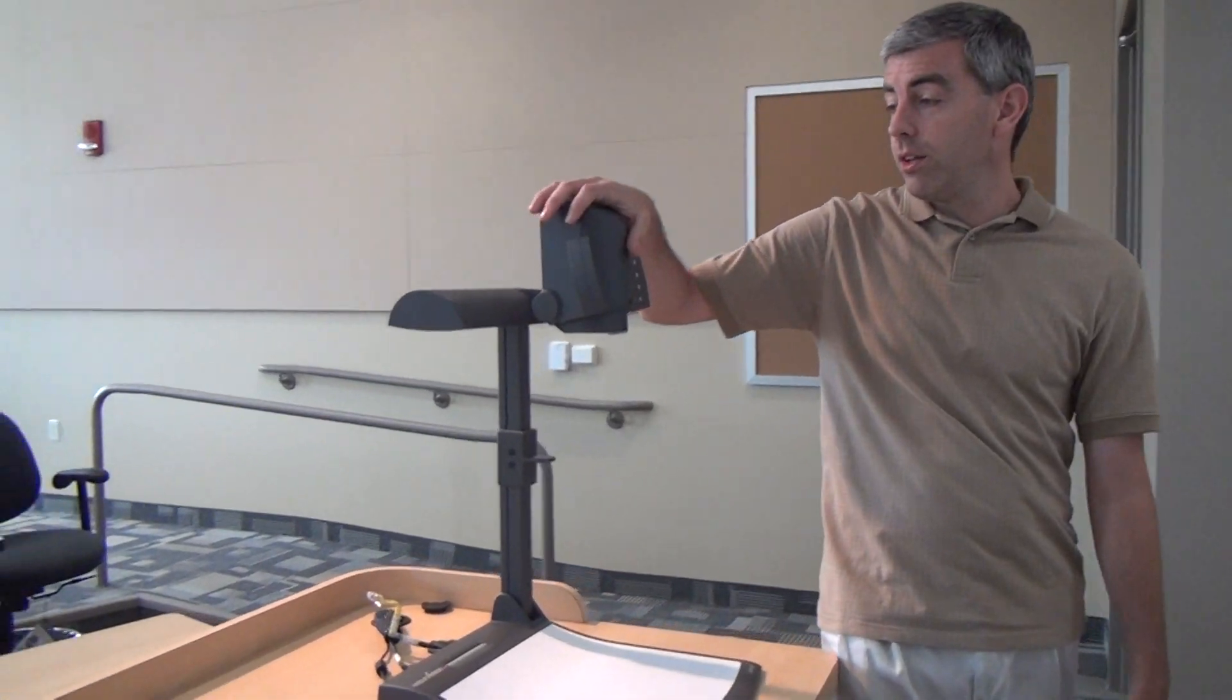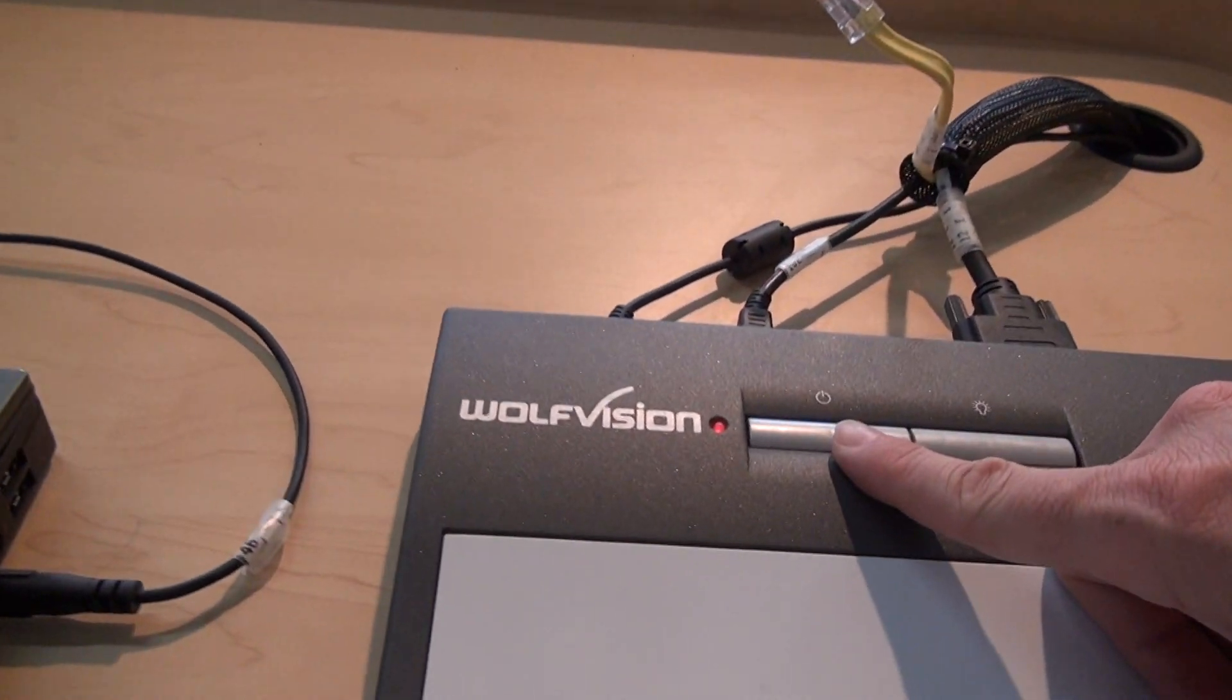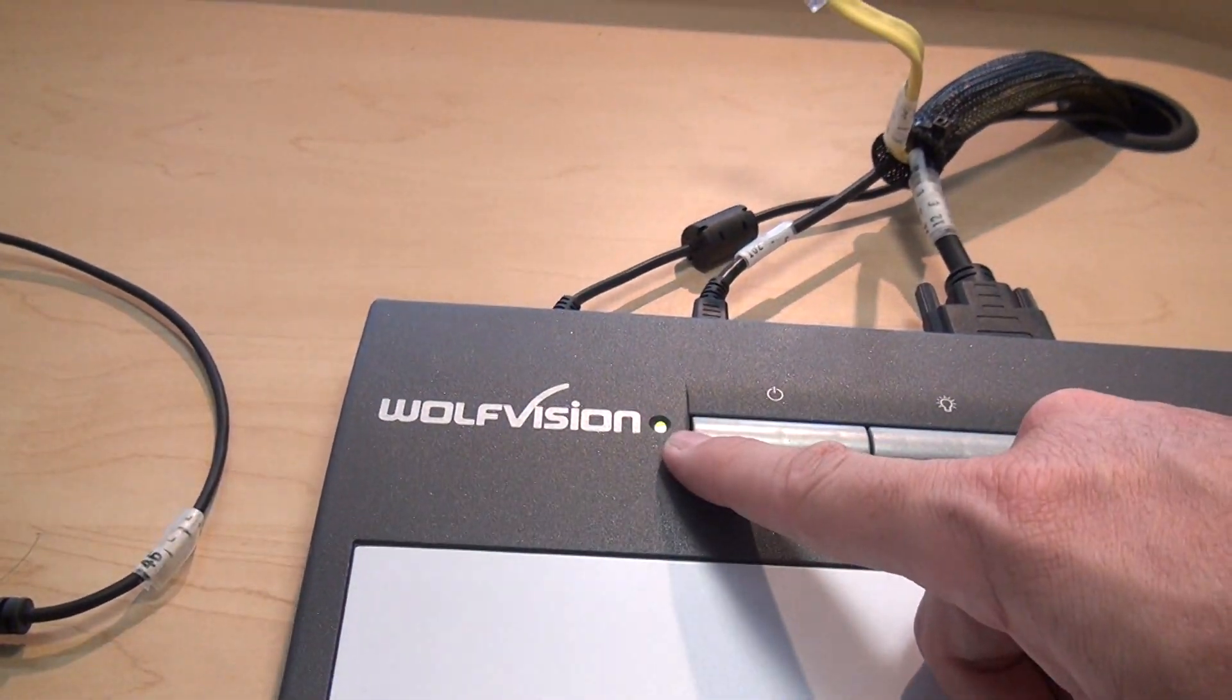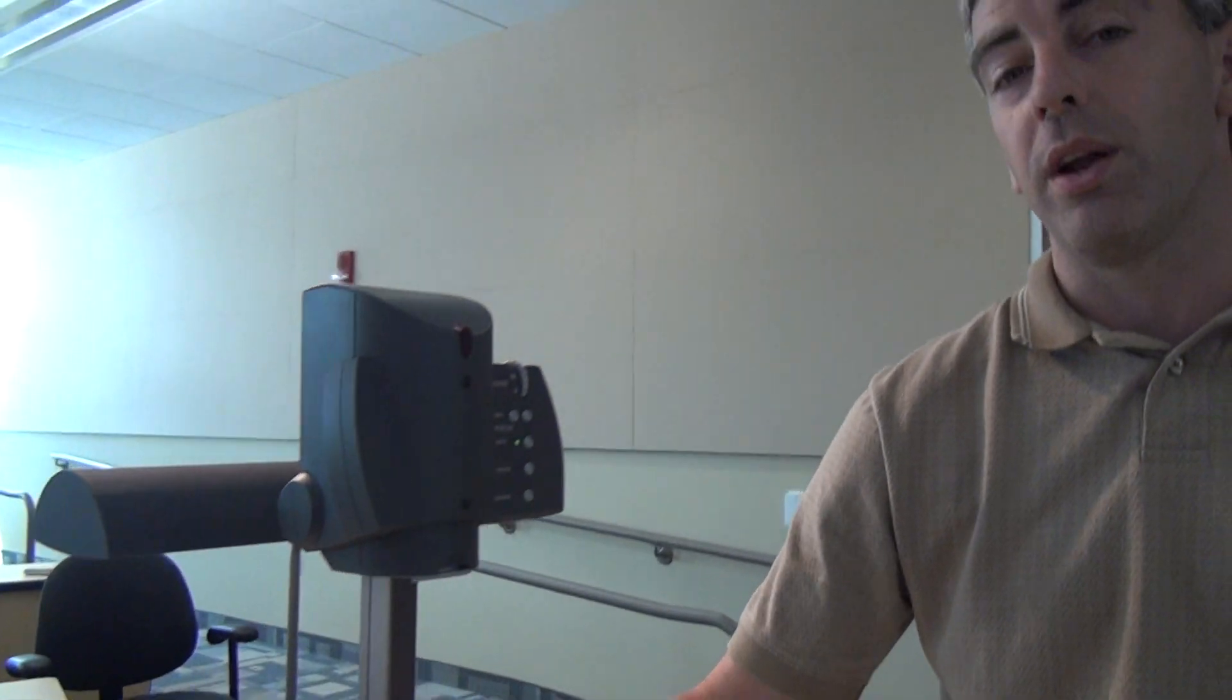The document camera's the next thing on our list here. I'm going to go ahead and come over to the right-hand side of the teacher station. The power button is in the back of the document camera. When I power it on that light blinks green for a few seconds. When it becomes a solid green we'll know the document camera is ready.